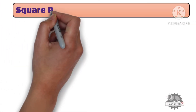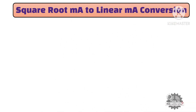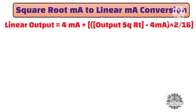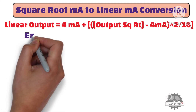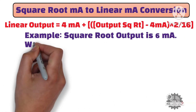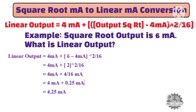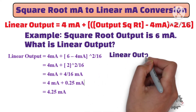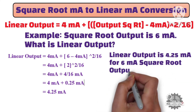Now, let's try to understand square root milliampere to linear milliampere conversion. This is a standard formula for square root milliampere to linear milliampere conversion. You just need to put the square root output milliampere value, and it gives the linear output milliampere value. For example, if the square root output is 6 milliampere, what is the linear output? Put 6 milliampere into the formula and do the simple math calculation. All values remain the same except the square root milliampere value. The result is 4.25 milliampere — in other words, the linear output is 4.25 milliampere for a 6 milliampere square root output.